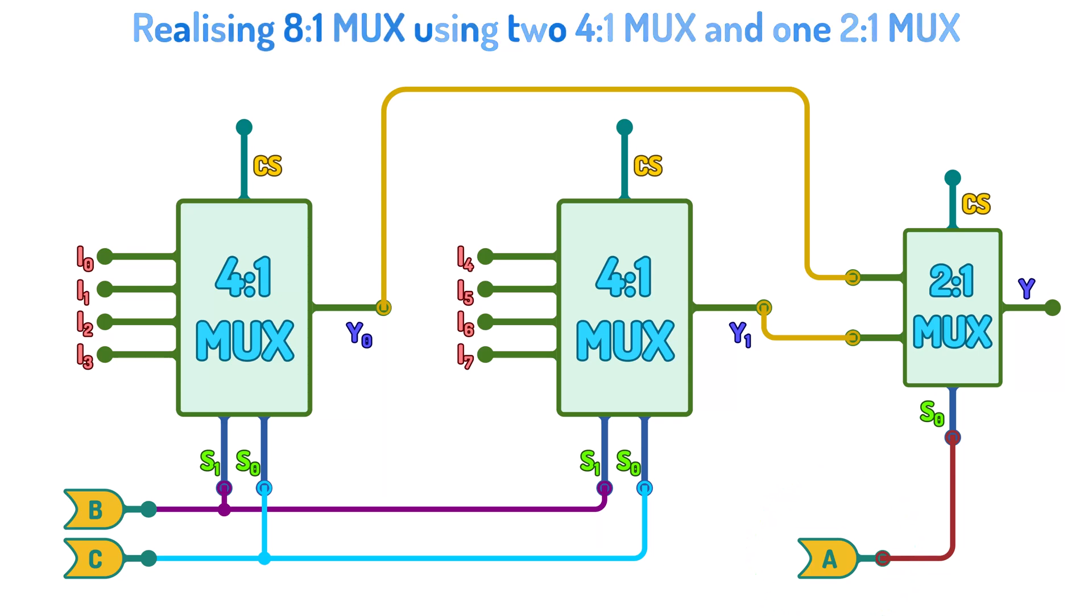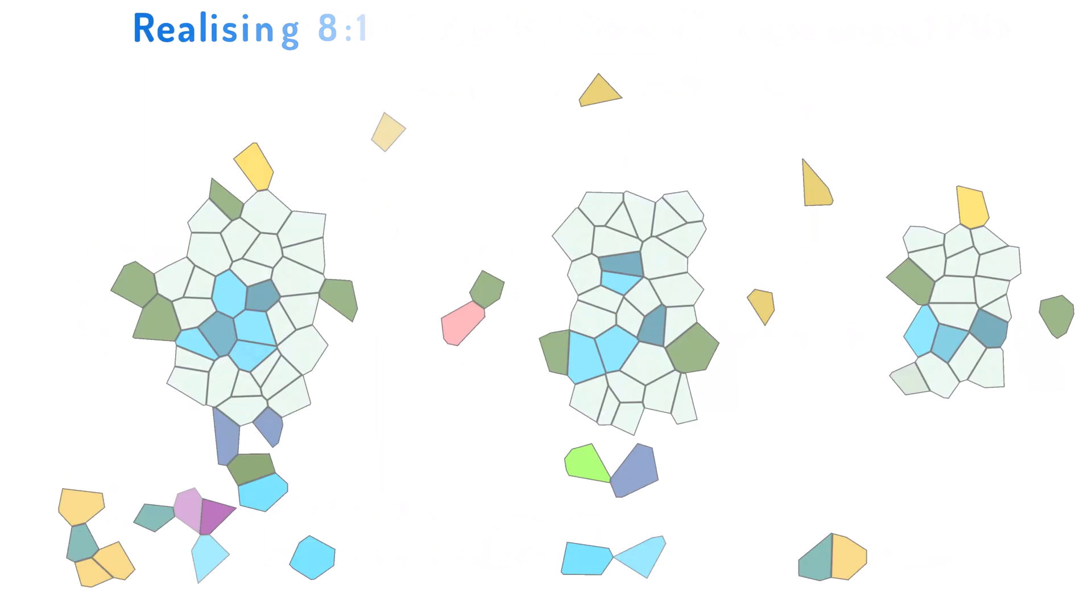So, depending on the value of these combinations, proper input gets selected. Hope this concept is clear. For revising the concept, try to create a 16-to-1 multiplexer using 8-to-1 multiplexer. Also, try to create a 16-to-1 multiplexer using a 4-to-1 multiplexer. Let us know the answers in the comments section below.